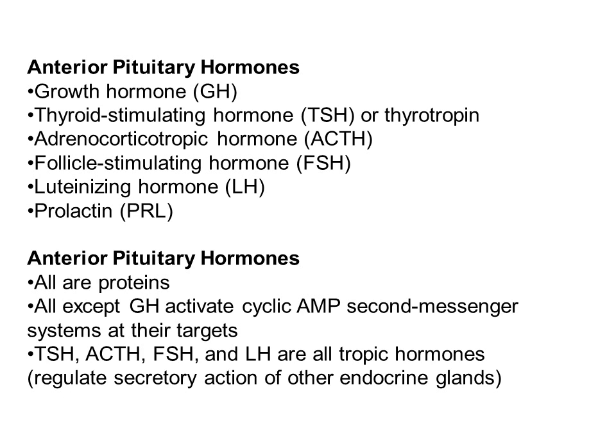These are the major anterior pituitary hormones, with their abbreviations and full names shown. They are all proteins, and all activate through the cyclic AMP second messenger system at their target. TSH, ACTH, FSH, and LH are all trophic hormones since they regulate the secretory activity of other endocrine glands.